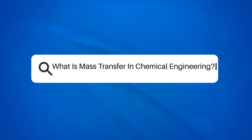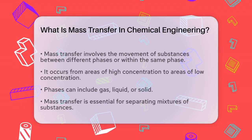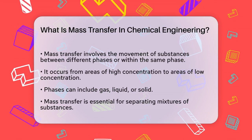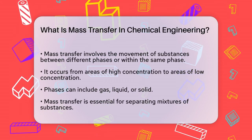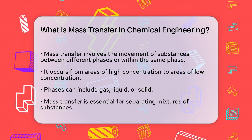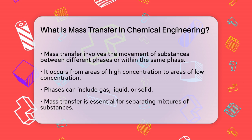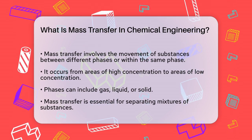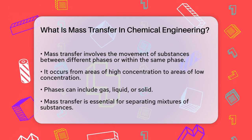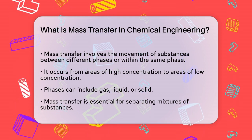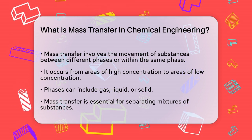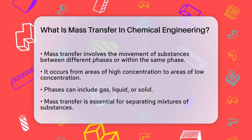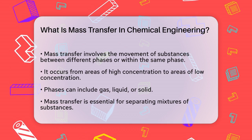What is mass transfer in chemical engineering? If you're curious about how substances move from one place to another in chemical processes, you're asking the right question. Mass transfer is essentially the study of how a component moves from one phase to another, or within the same phase from a region of high concentration to a region of low concentration. This can happen in various phases, such as between a gas and a liquid, or even within a solid.